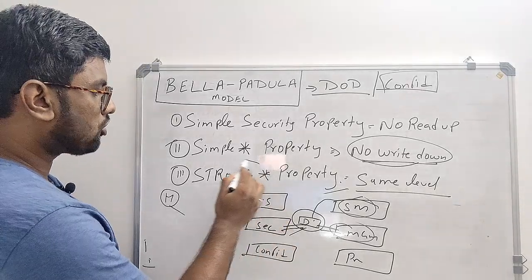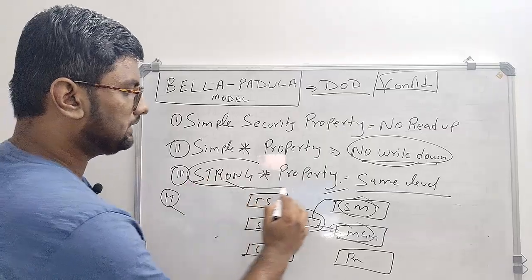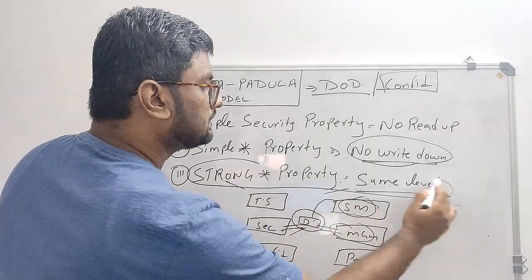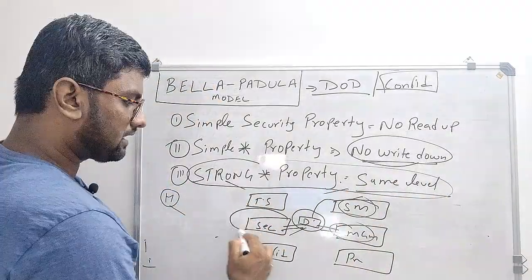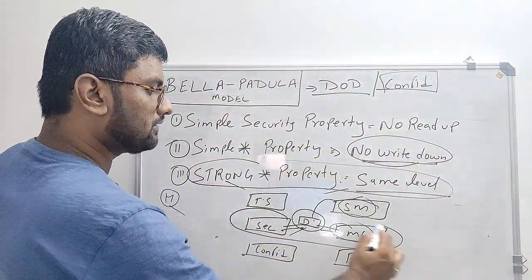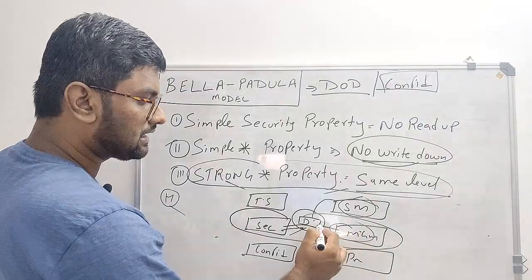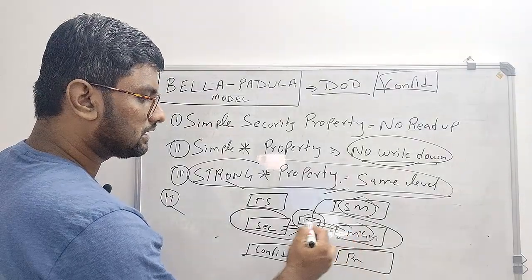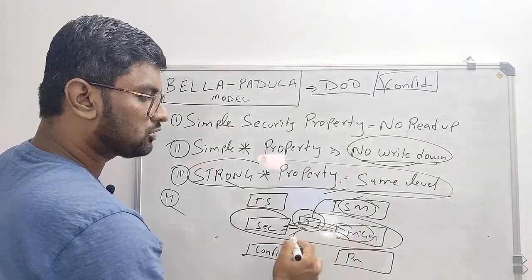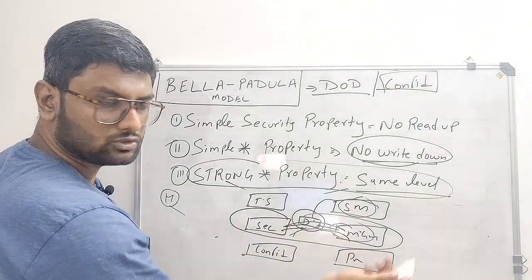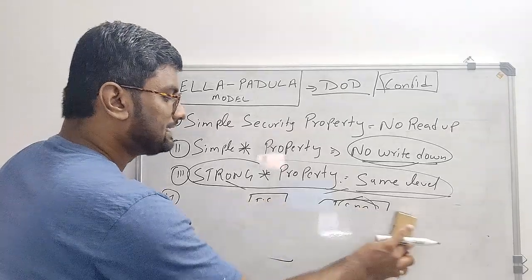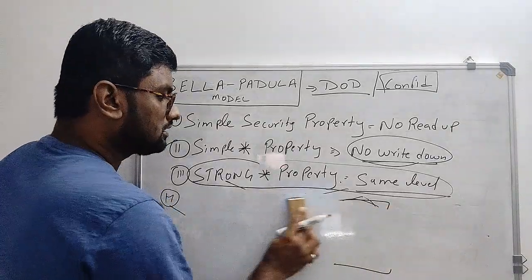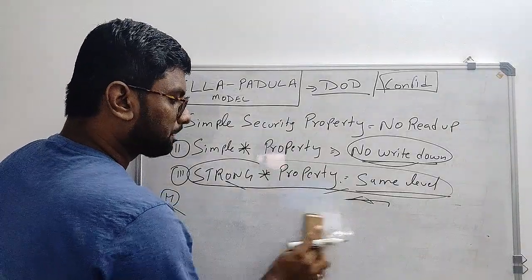The third rule is the Strong Star Property, which means read and write at the same level. A Management-level person can read and write data that is classified at the Management level. That is the Strong Star Property.